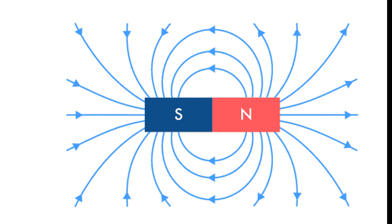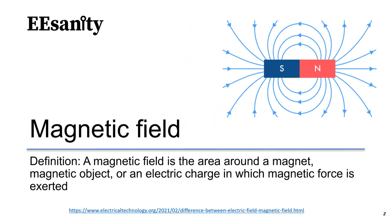In other words, field lines exit the magnet at its north pole, travel around in the air, and re-enter the magnet through the south pole. Remember, field lines don't start in one place and stop in another. Magnetic field travels in closed paths, which means they will continue to travel in the same path again and again.